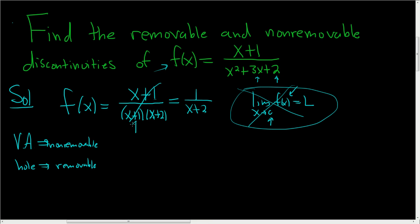And you ask yourself, what makes this 0? Well, negative 1. So x equals negative 1. This is removable. So that takes care of that.